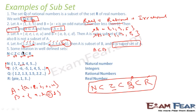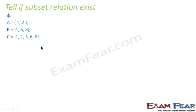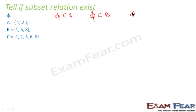Now we will find if subset relationships exist between given sets. First, the relation between phi and A: since phi is a subset of any set, phi is a subset of A, phi is a subset of B, and phi is a subset of C. This relation is always valid.